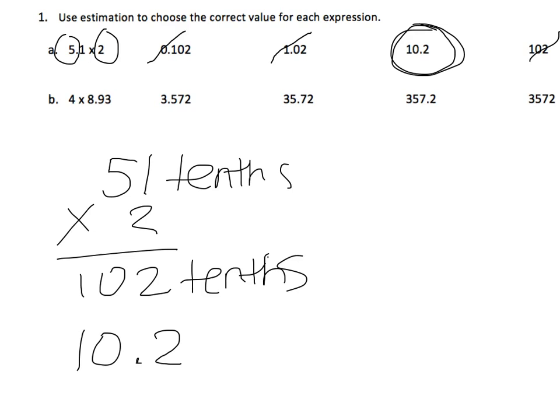Now for B, it asks us to multiply 4 times 8 and 93 hundredths. We're going to do the same thing, where we're going to turn 8 and 93 hundredths and decompose it into the smallest possible units, which is in the hundredths. So it's 8 and 93 hundredths times 4.